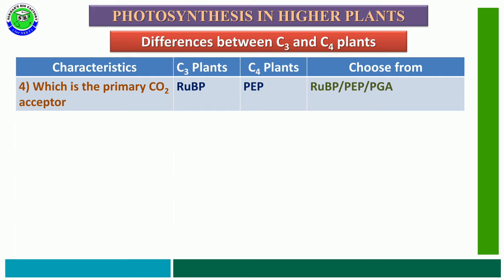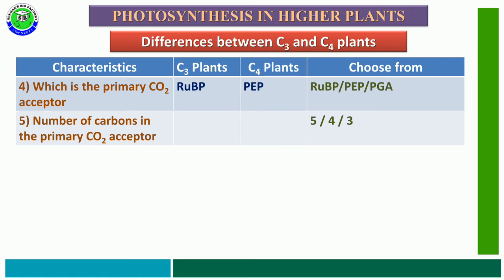The fifth characteristic feature is the number of carbons present in the primary CO2 acceptor. The given options are 5, 4, or 3. In C3 plants, RuBP is the primary CO2 acceptor and it consists of 5 carbons. But in C4 plants, the primary CO2 acceptor is phosphoenolpyruvate, which consists of 3 carbons.